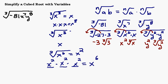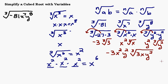Putting this all together, on the outside of the radical I have negative 3, x squared, and y squared. Inside the radical under the cubed root I have 3, x, and y squared. So the answer is negative 3 x squared y squared times the cubed root of 3xy squared. The approach here is to break it up into each individual factor — the negative 81, x to the seventh, and y to the eighth — and look at those separately, then put it all back together at the end.